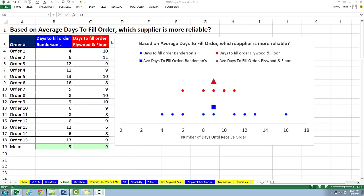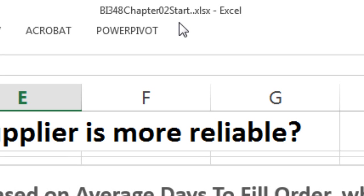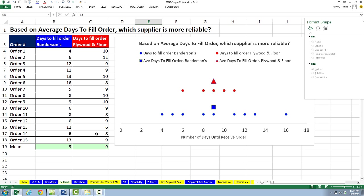Welcome to Highline BI 348 class video number 23. If you want to download this workbook, BI 348 Chapter 2 Start or the Finished File, click on the link below the video.